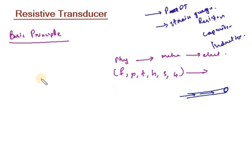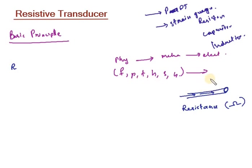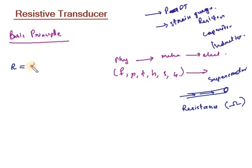Resistance is denoted by the letter R and is measured in the unit ohm. If we have a superconductor, resistance is almost zero, which is an ideal condition. Normally, if we use copper or any other wire, the electricity flow is against a resistance, and that resistance is measured in ohms. Resistance is given by the formula R = ρL divided by A.